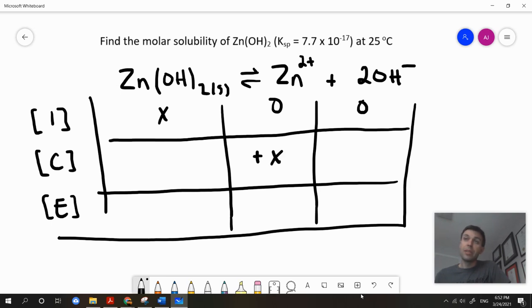I'm going to produce x of zinc ions, a 1 to 1 ratio, and I'm going to produce 2x of the hydroxide ions, a 1 to 2 ratio. So, at equilibrium, there's going to be x moles per liter of zinc ions and 2x moles per liter of hydroxide ions.